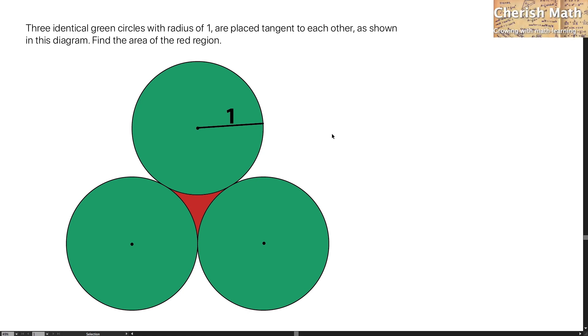Say hi from Chavez Math, and this is the question. Three identical green circles with radius of 1 are placed tangent to each other, as shown in this diagram. Find the area of the red region.